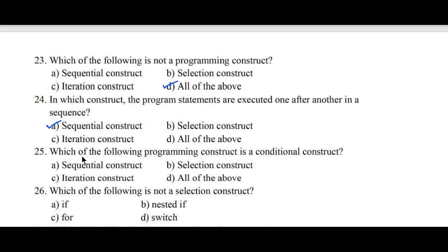Question number 25: Which of the following programming construct is a conditional construct? A. Sequential construct, B. Selection construct, C. Iteration construct, D. All of the above. Here selection constructs are also called conditional constructs. Hence option B is the right answer.